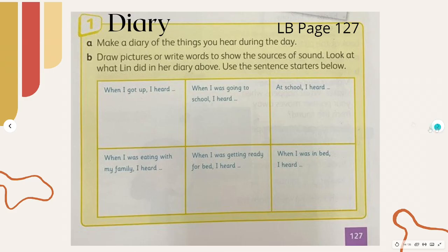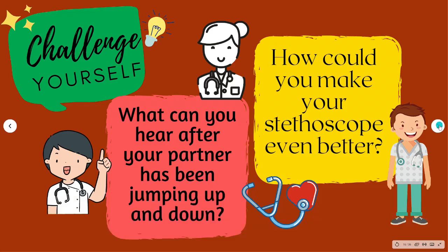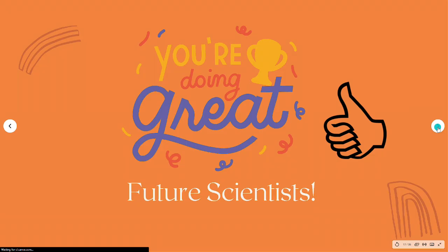A diary is a daily record of personal activities or observations kept at frequent intervals. You can also make your own diary just like Lynn, who drew pictures and wrote words about what she heard from the time she woke up, going to school, at home, and even in bed. This could be a fun activity where you can compare with your partner's diary, discuss and share the similarities and differences. Please complete your workbook on page 75 using a stethoscope. Now challenge yourself — what can you hear after your partner has been jumping up and down? And how could you make your stethoscope even better? Future scientists, let's hear your thoughts. Thank you and you are doing great!